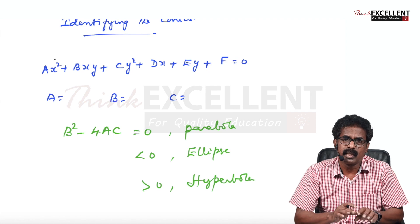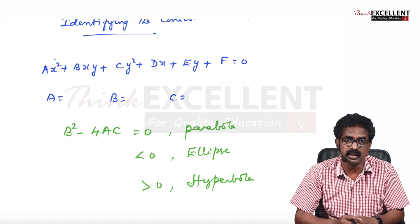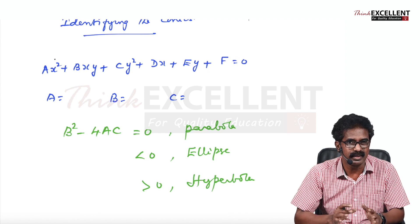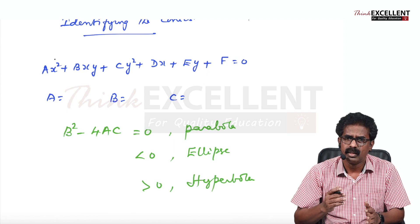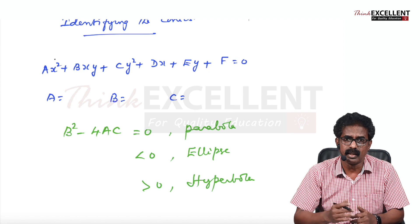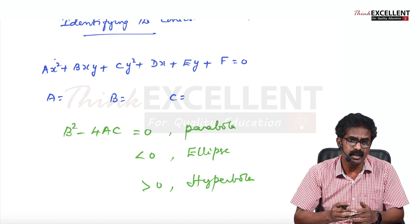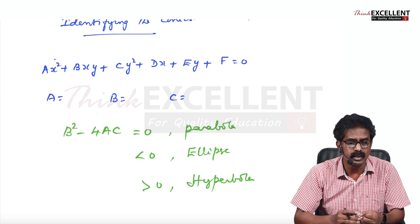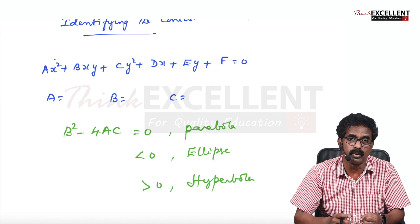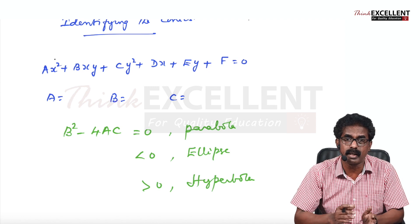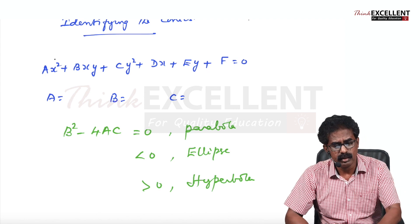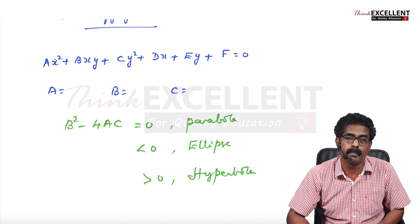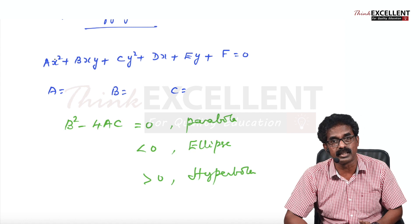Suppose a general second degree equation is given. Then you identify the values of A, B, C — where A is the coefficient of X², B is the coefficient of XY, and C is the coefficient of Y². Then you find B² minus 4AC and compare with zero: if it equals zero, parabola; less than zero, ellipse; greater than zero, hyperbola.